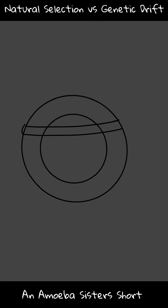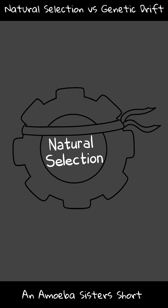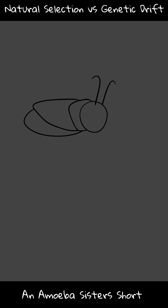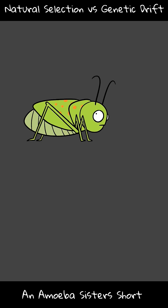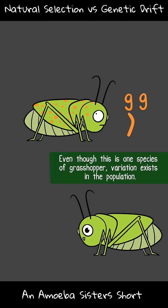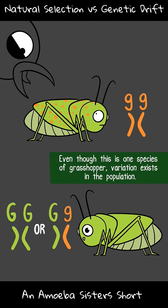Natural selection is often phrased as survival of the fittest. Biological fitness here is related to surviving to reproduce and having offspring. Consider a population of one species of grasshopper. If these orange spotted grasshoppers are more easily seen by predators than those that are solid green, then the orange spotted grasshoppers might be eaten before they can reproduce as much.